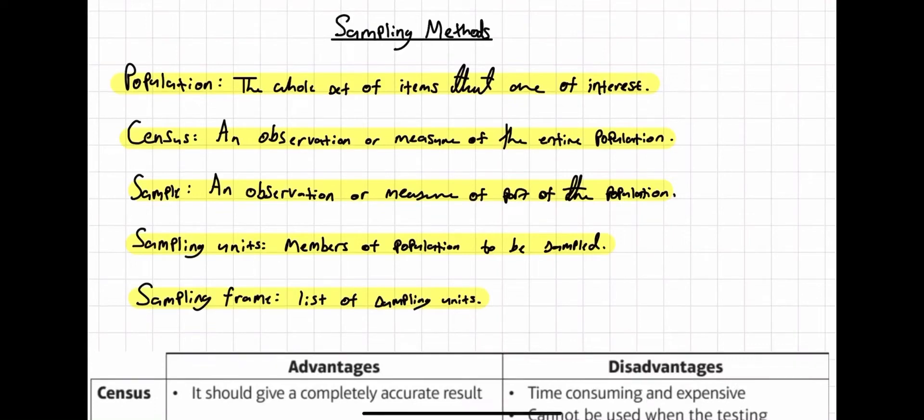Welcome to this video on populations and samples. A population is a whole set of items that are of interest to you. A census is an observation or measure of the entire population. A sample is only measuring part of the population. And if you see a question where it says state the sampling unit, this just basically means the people who you are sampling.